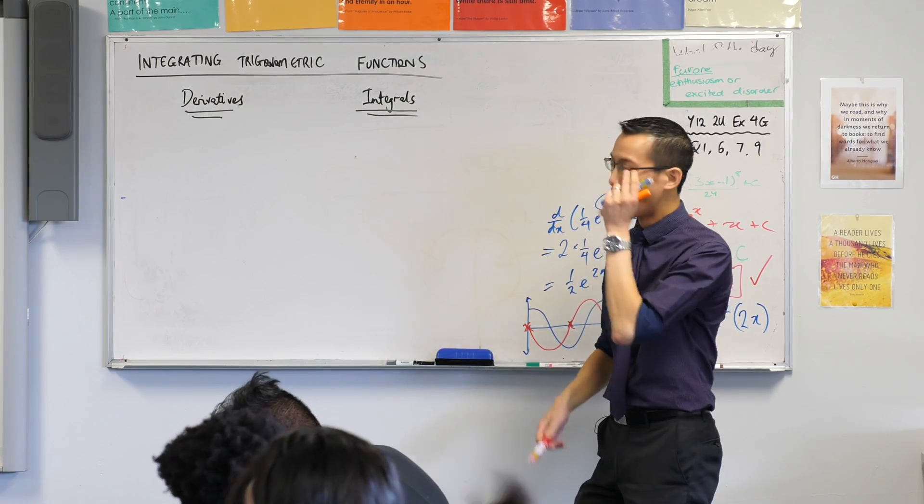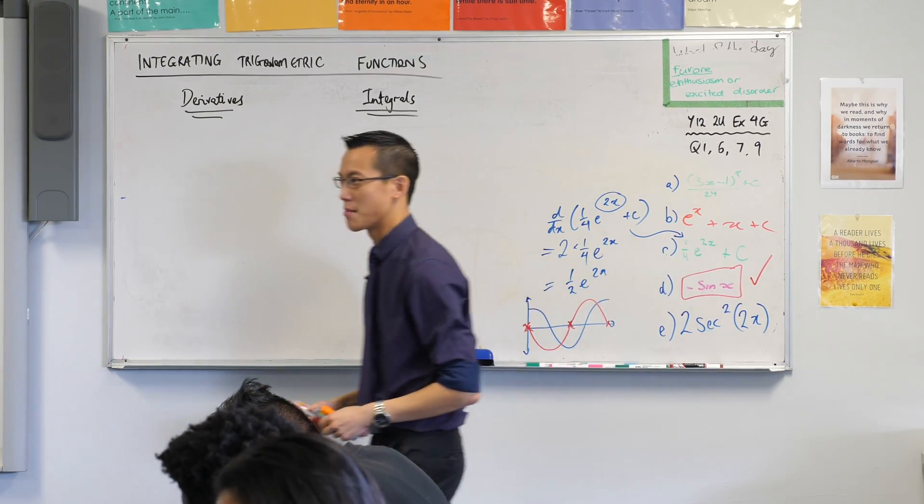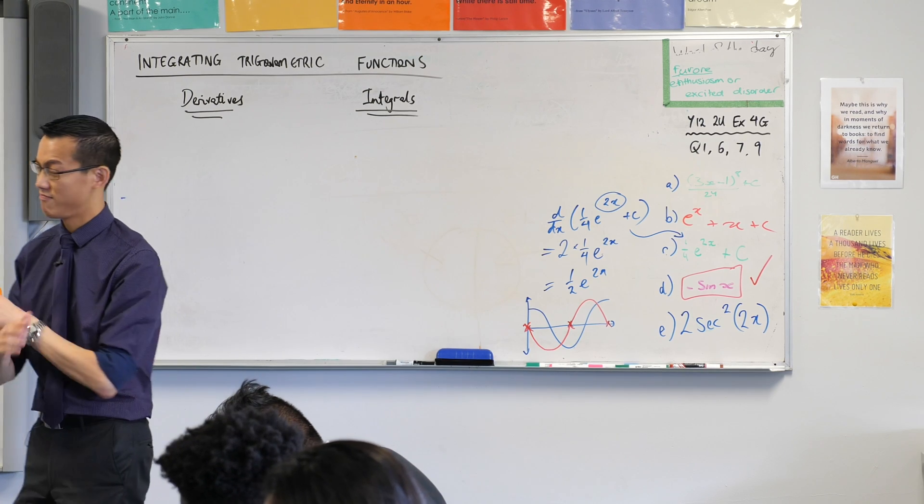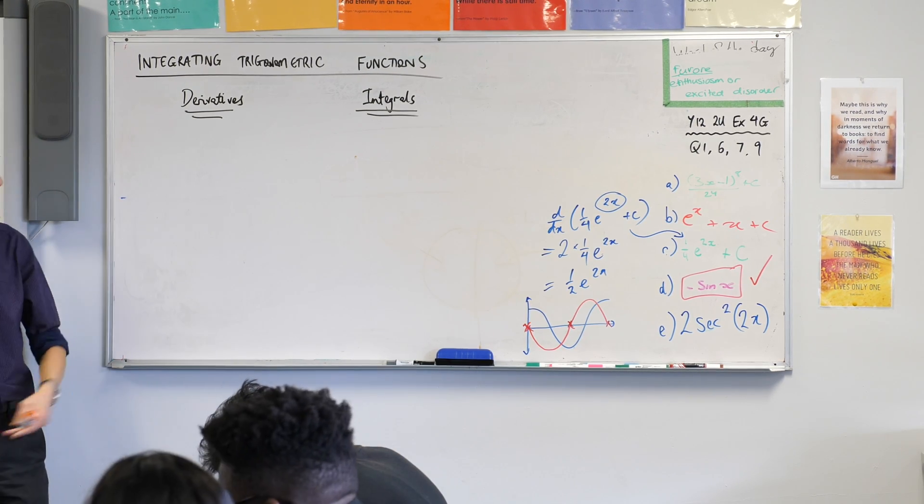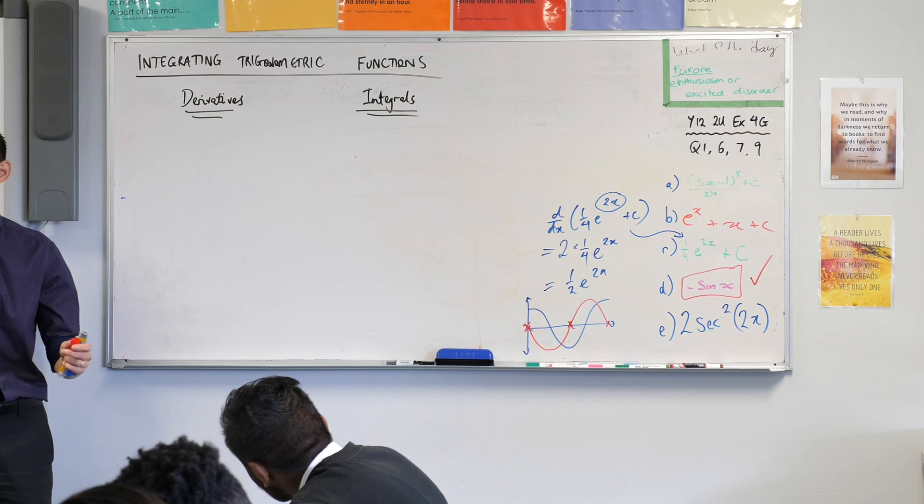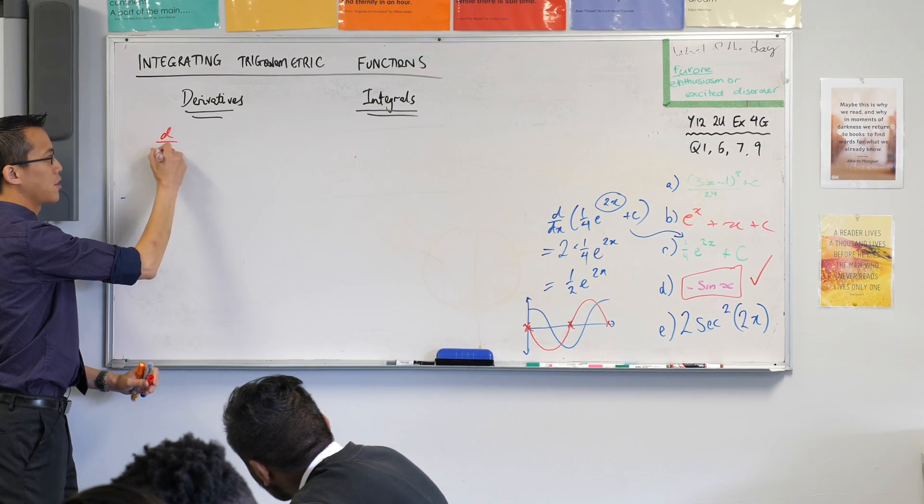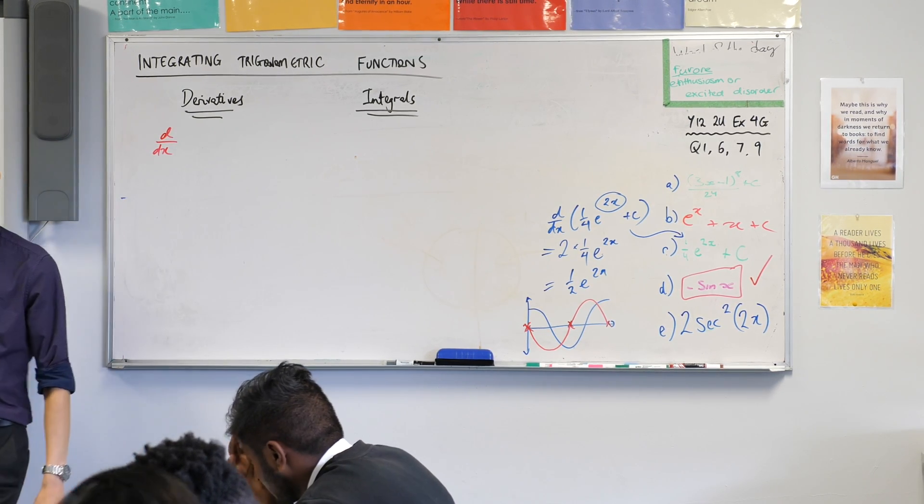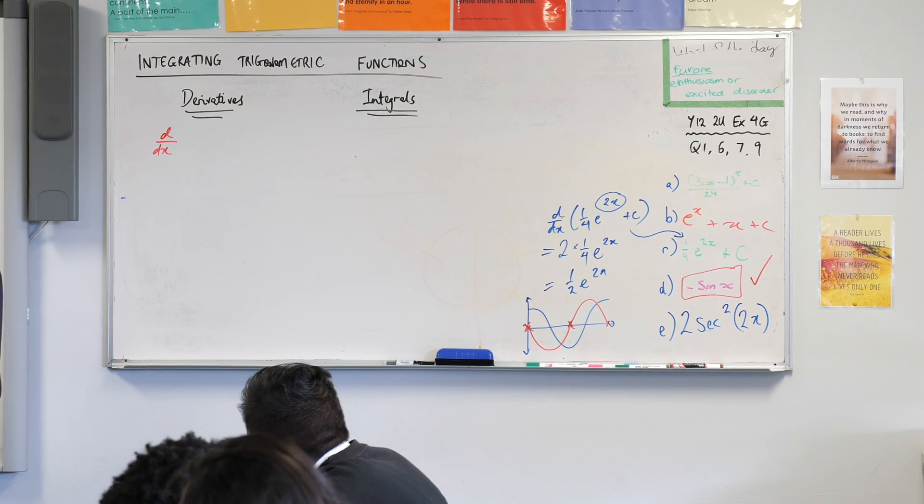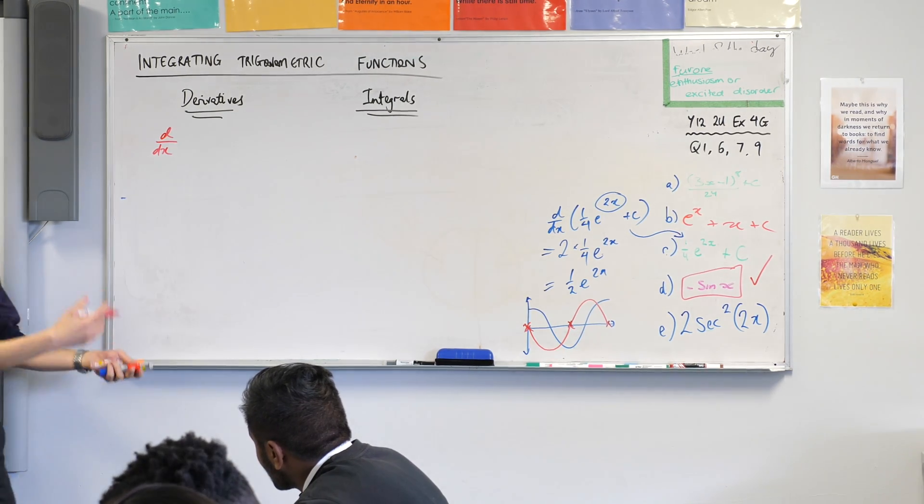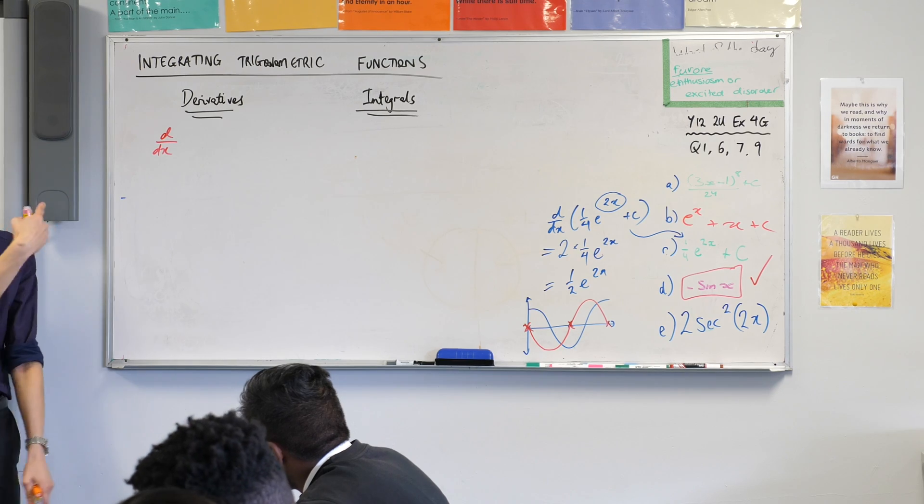So we know how to differentiate a bunch of trigonometric functions. Actually we know how to differentiate all of them. We're going to learn how to integrate most of them. So let's start. The simplest of the trigonometric functions is the base one, it's sine, because cos is actually cosine, it's based on sine.